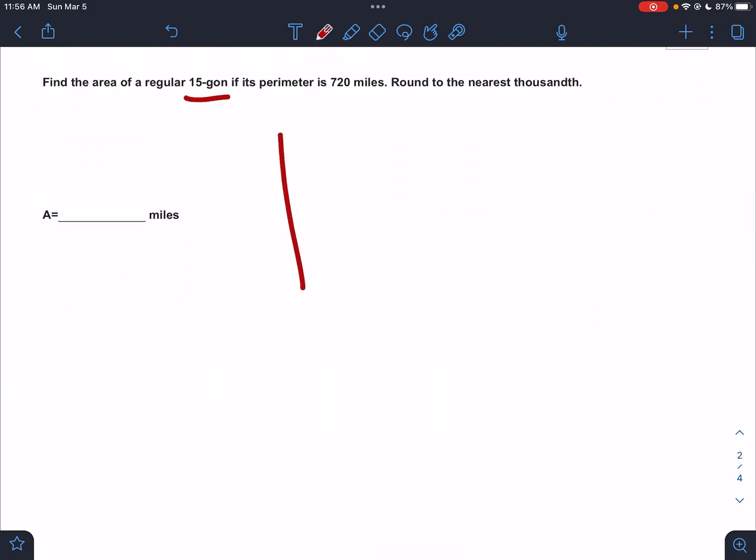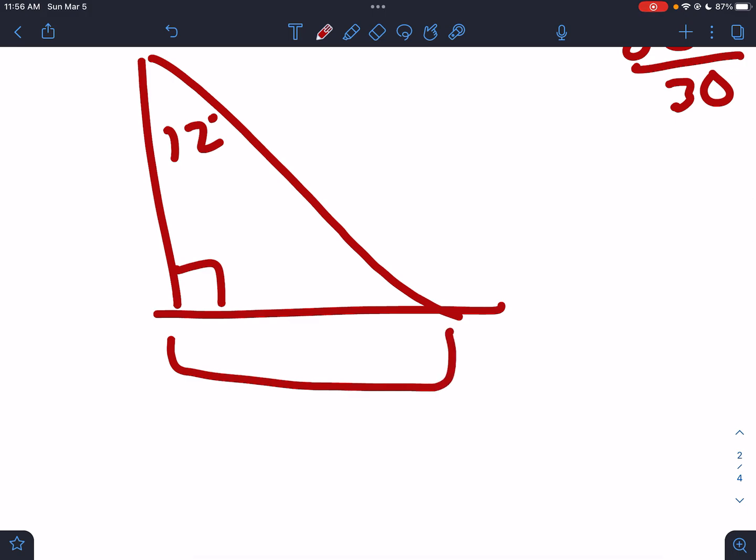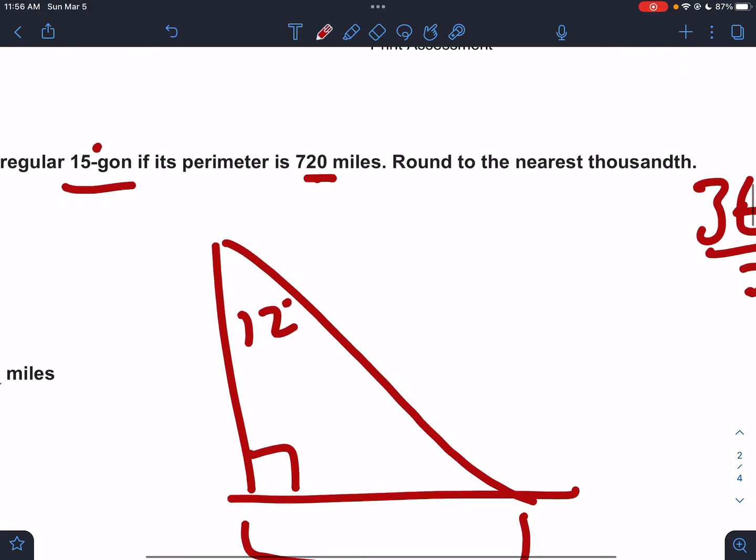Find the area of a regular 15-gon. First step, every time, is you draw a right triangle. You do 360 divided by 30. Why? Because if it's a 15-gon, there'd be 30 of them. That means the angle at the top is 12 degrees.